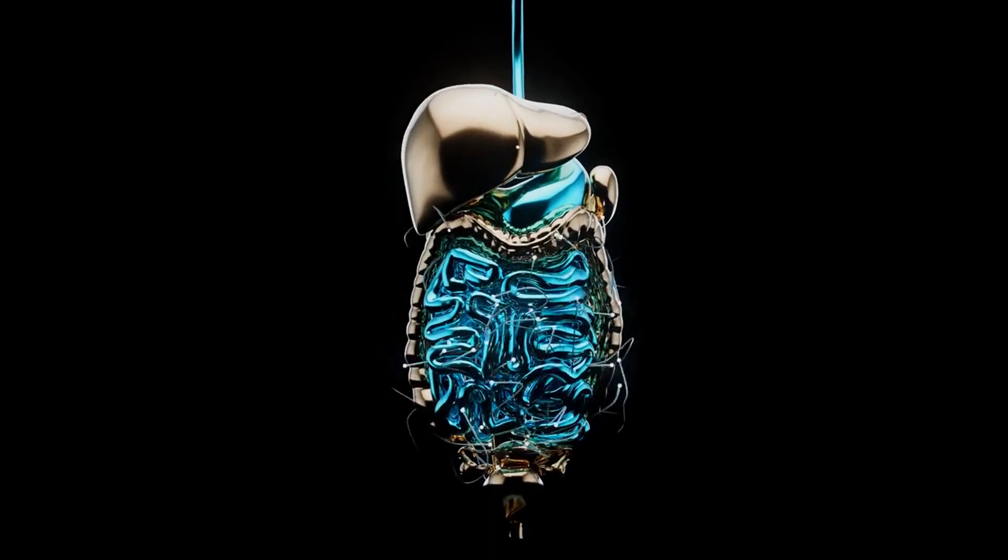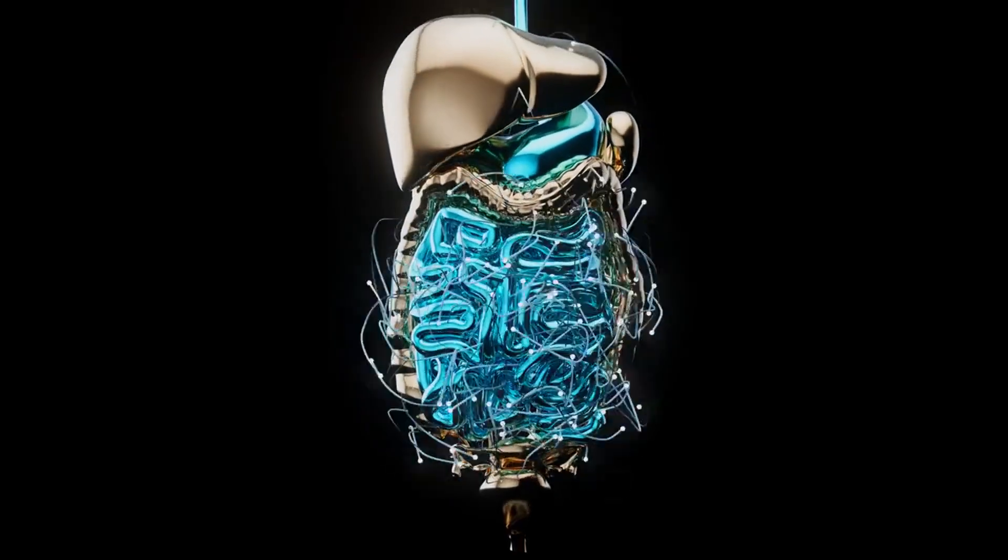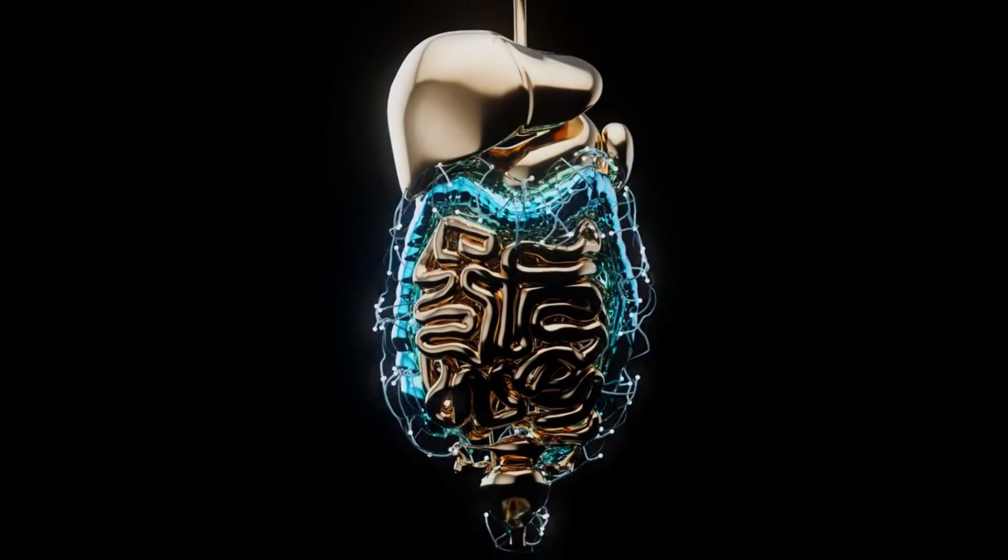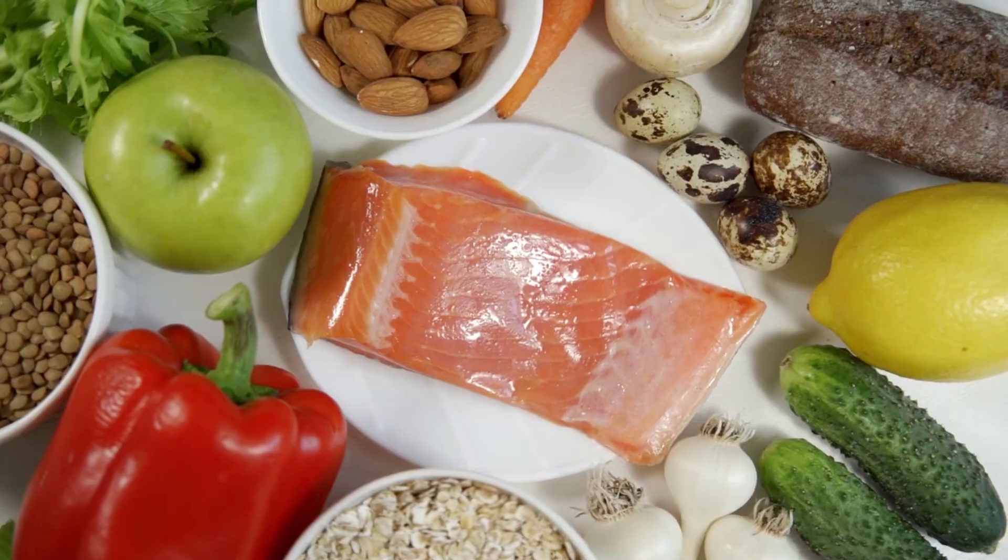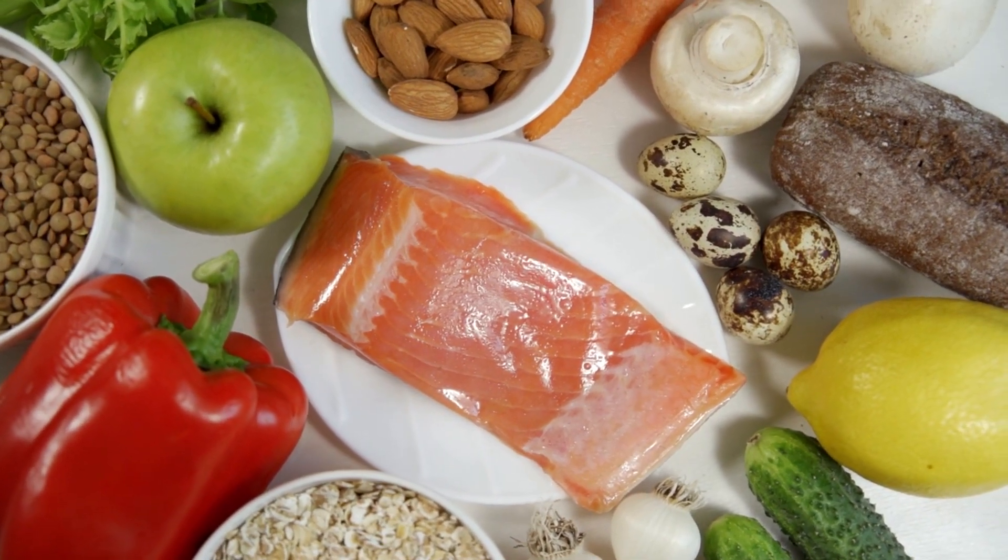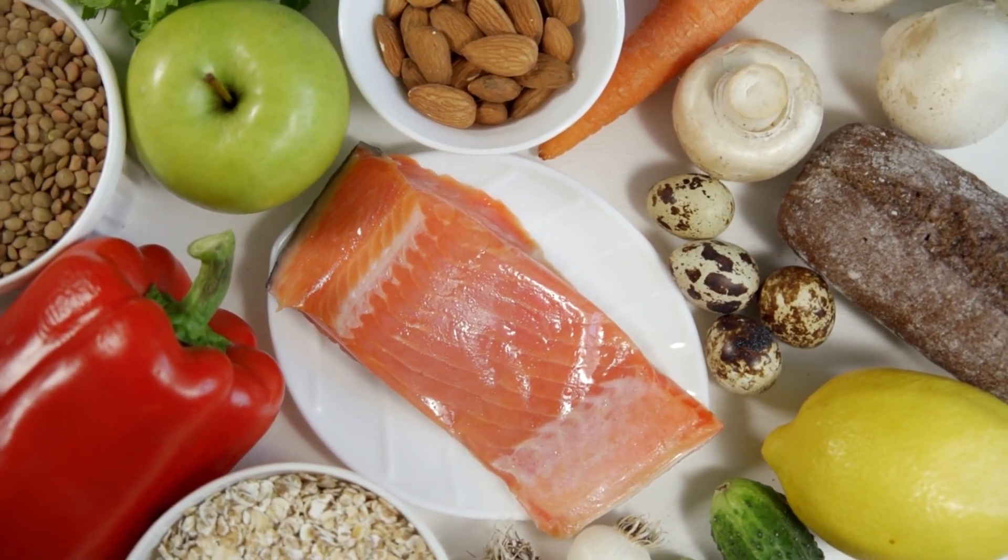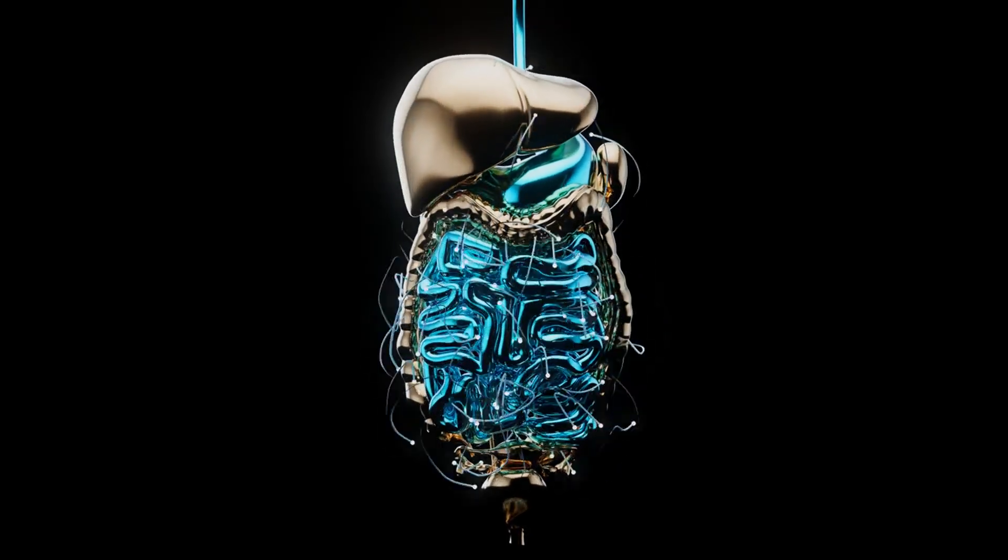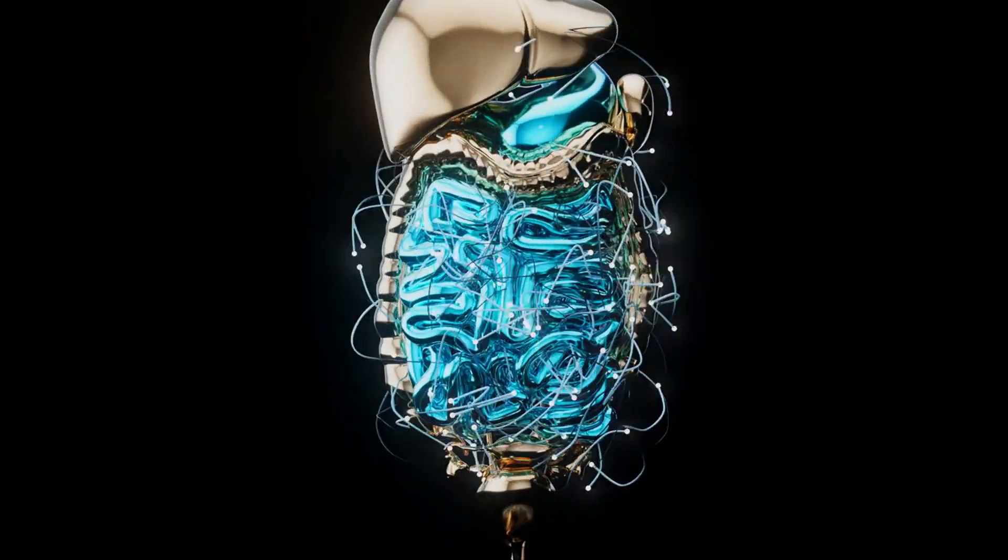Nurturing the neurotransmitter telephone. Gut health matters. To keep the neurotransmitter telephone lines crystal clear, nurturing gut health is paramount. A diverse and balanced gut microbiota is essential for optimal neurotransmitter production and a harmonious gut-brain connection. Here are some key strategies to promote gut health and support the neurotransmitter telephone.